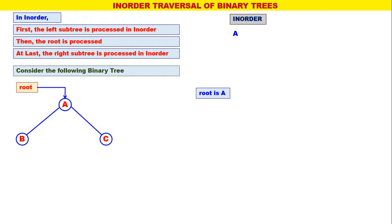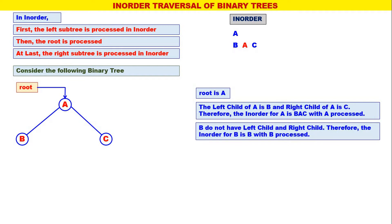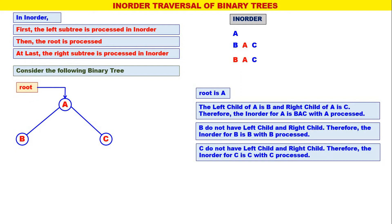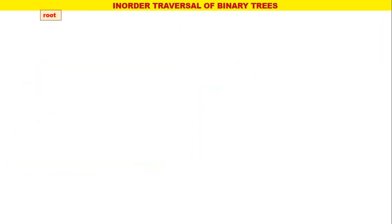Root is A. The left child of A is B and the right child of A is C. Therefore the inorder for A is BAC, with A processed — the root is in the middle. Next, B does not have a left child or right child, so the inorder for B is B only. Similarly, C does not have children, so the inorder for C is C only. Therefore the inorder for this binary tree is BAC.